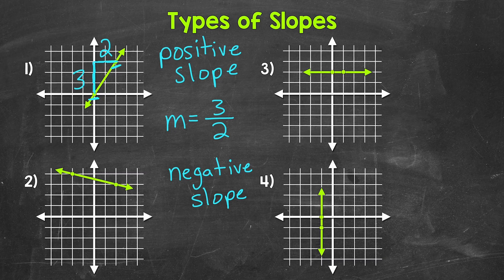Now let's find the slope of this line. Here are our two points. We will go from the left point to the right point. Starting with the rise — here we need to go down in order to align with the other point. We go down one unit, so since we went down, our rise is negative one.